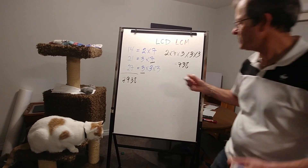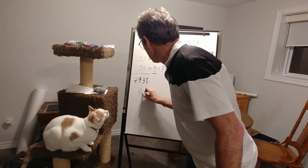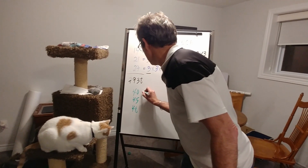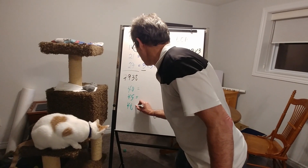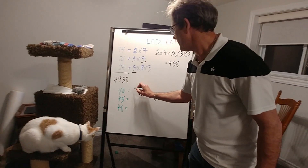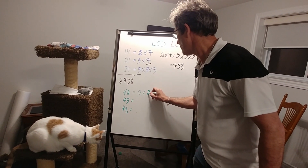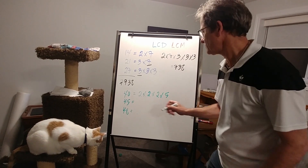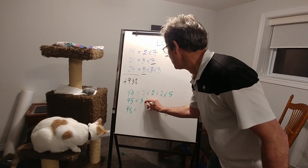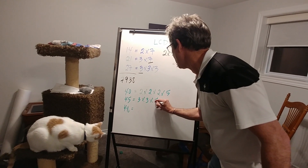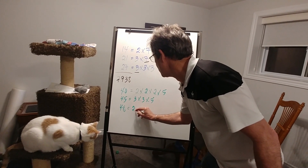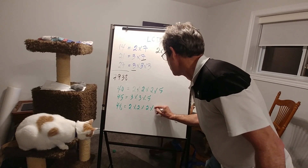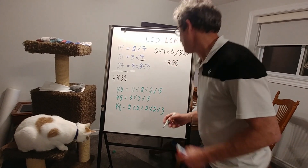Let's do one more. Let's say we had the numbers 40, 45, and 48. These are bigger numbers, so it's going to be a little bit harder. 40 is 2 times 2 times 2 times 2 times 5. 45 is 3 times 3 times 5. And 48 is 2 times 2 times 2 times 2 times 3.